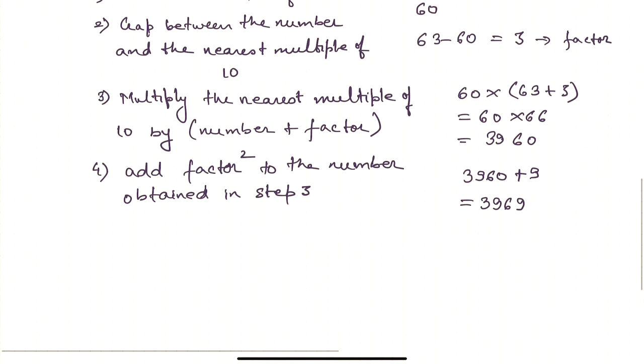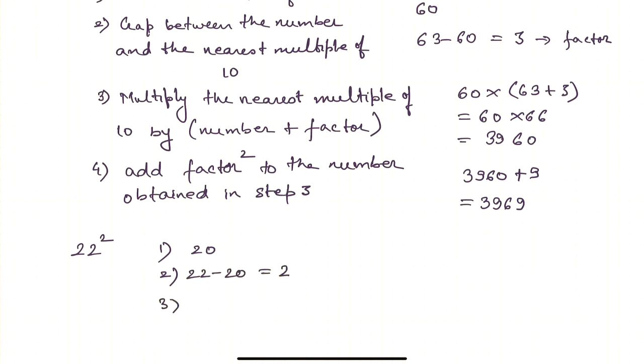Let's take another example. Let's say we have to multiply 22 square. The nearest multiple of 10 is 20. Gap between the number and the nearest multiple is 22 minus 20 equals 2. Then multiply the nearest multiple of 10, so that is 20 into 24, which is nothing but 480. Then the fourth one is 2 squared plus 480 equals 484.